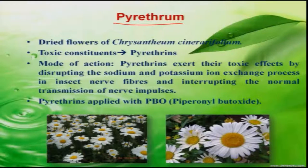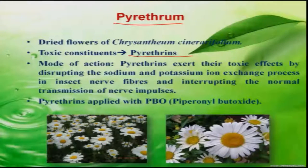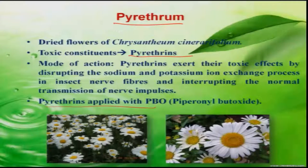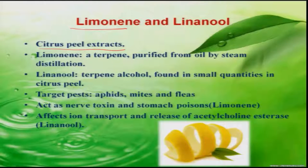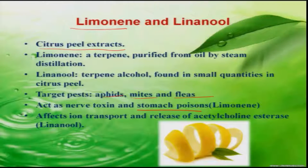Next is pyrethrum, whose toxic constituents are pyrethrins. It affects the central nervous system of insects, bringing about paralysis and death. Pyrethrum is applied with PBO to enhance its insecticidal activity. Limonene and linalool, which are extracts from citrus fruits, affect sucking pests like aphids, mites, and fleas. These also affect the nervous system and act as stomach poisons.